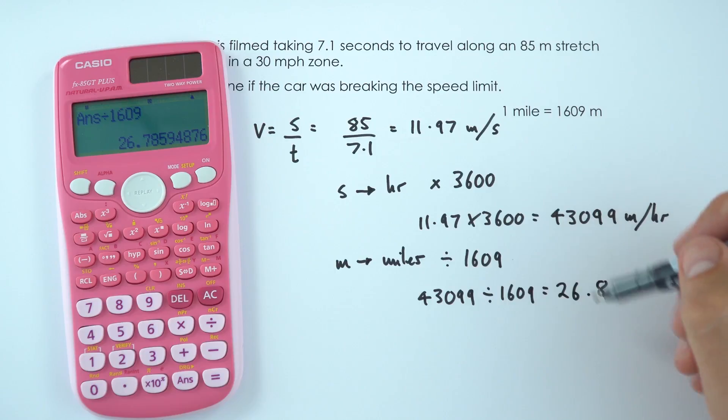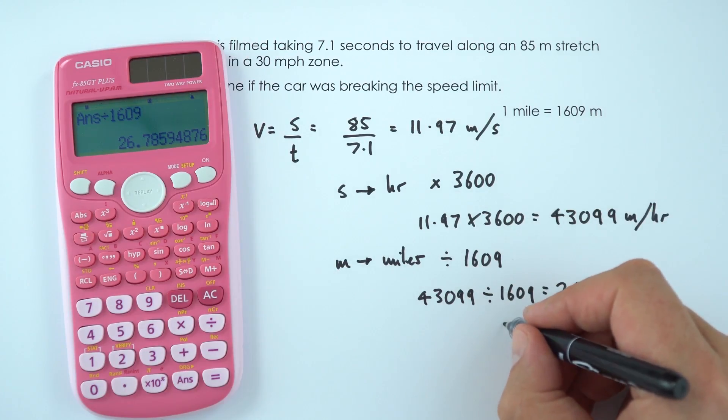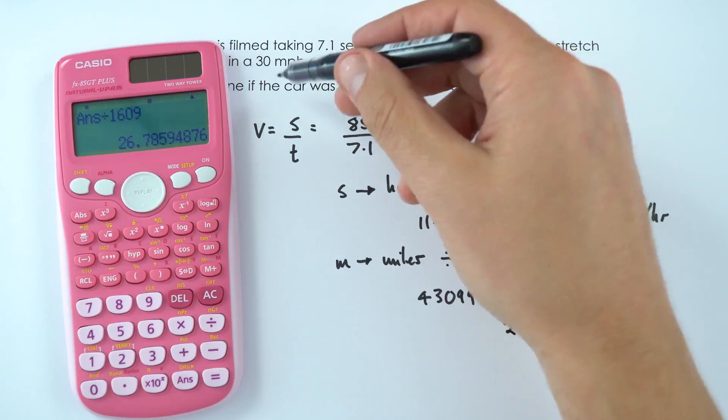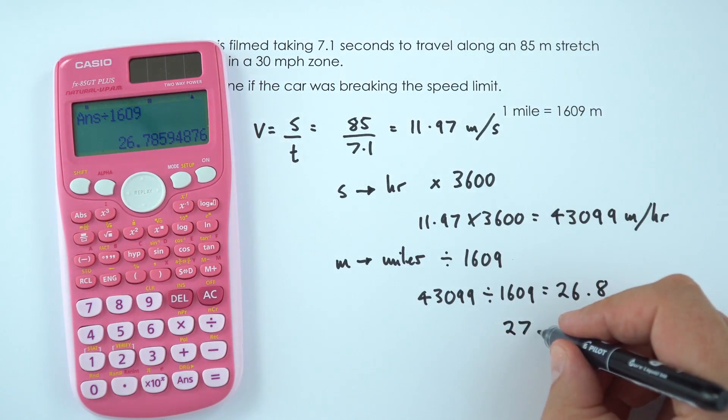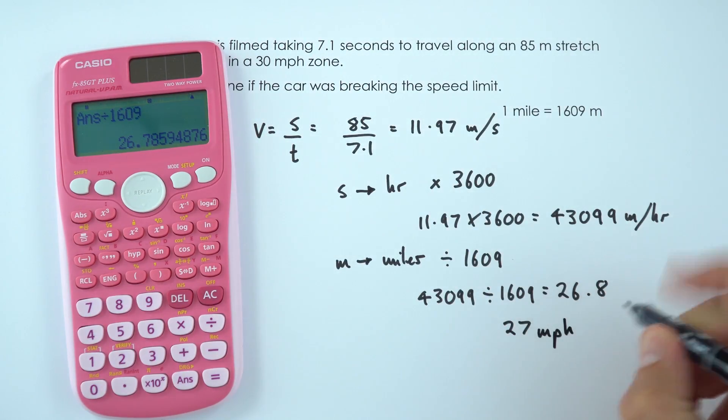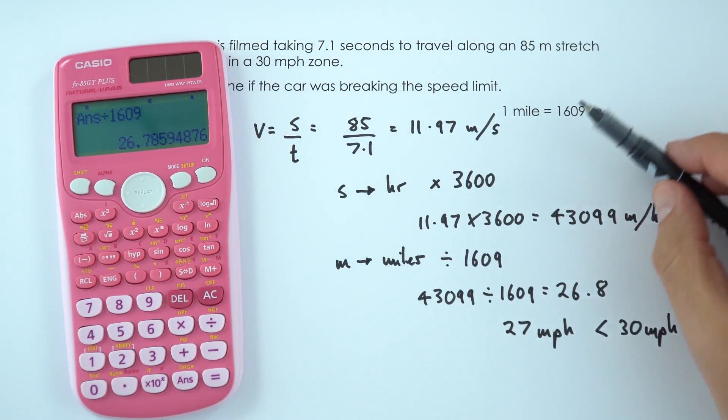So this means that the speed of that car, even rounded up to two significant figures like we have in the raw data here, is 27 miles per hour. That is still lower than 30 miles per hour, which means that the car wasn't speeding and it was well within the speed limit.